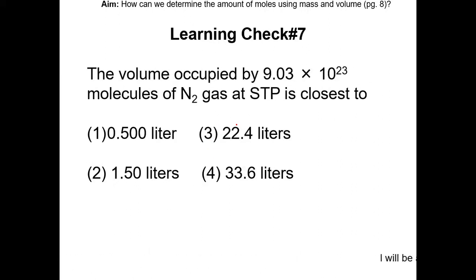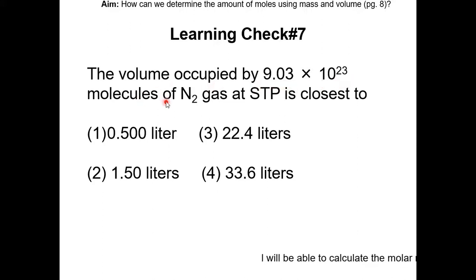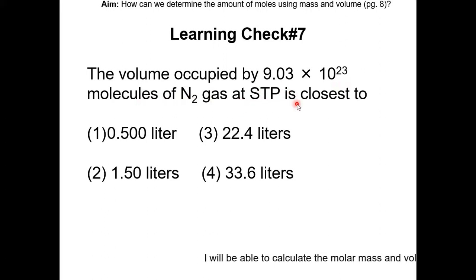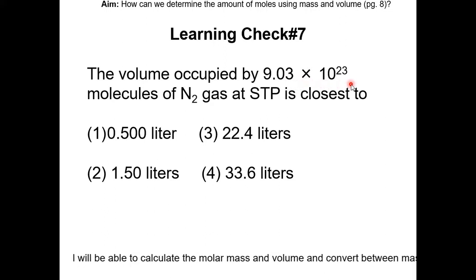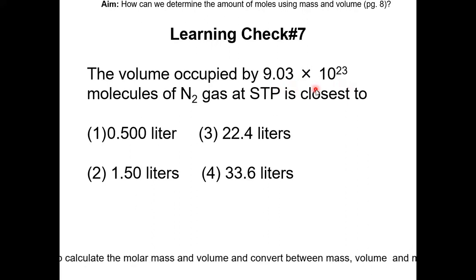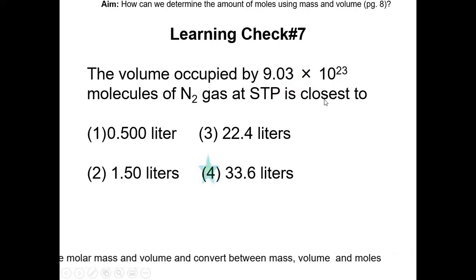Learning check number 7: the volume occupied by 9.03 × 10²³ molecules of N2 gas at STP is closest to what? The first step is to figure out how many moles is 9.03 × 10²³ — that is 1.5 moles. 1.5 times 22.4 is 33.6, so the answer is choice 4.